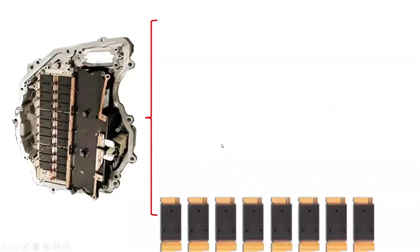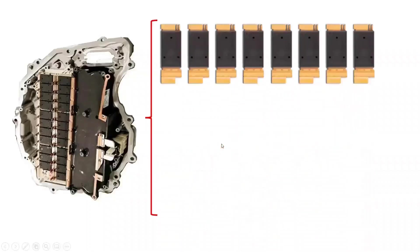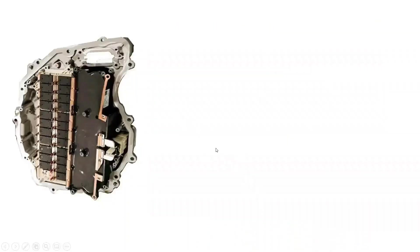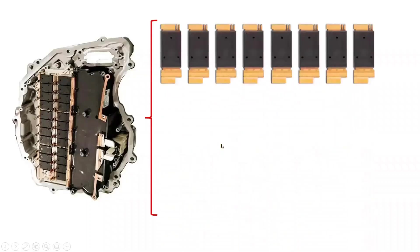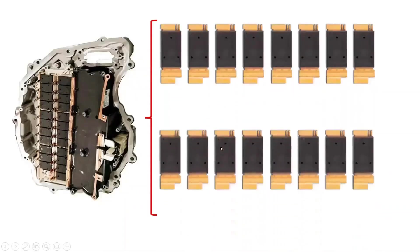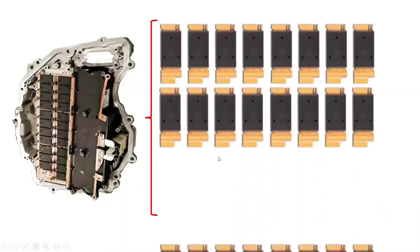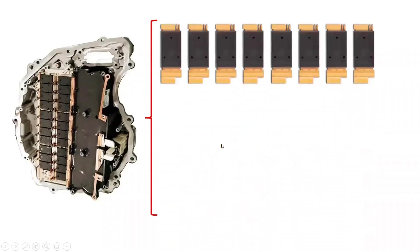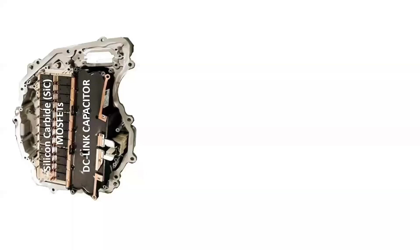Tesla Model 3 uses silicon carbide MOSFETs for its central inverter. It consists of 24 silicon carbide MOSFETs from STMicroelectronics with a custom package designed for it. Each of the silicon carbide MOSFETs is rated at 650 volts and 100 amperes. The Tesla Model 3 uses a three-phase two-level inverter topology with an input battery voltage of 400 volts.